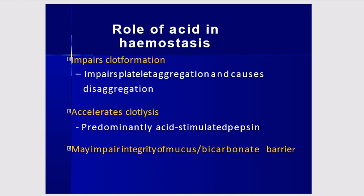The role of acid in hemostasis: acid impairs clot formation by impairing platelet aggregation and causing disaggregation. It also accelerates clot lysis predominantly via acid-stimulated pepsin, and may impair the integrity of the mucus and bicarbonate barrier.